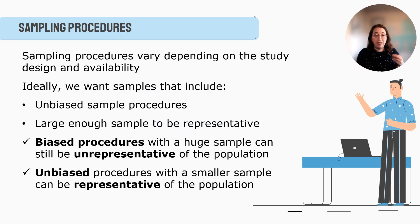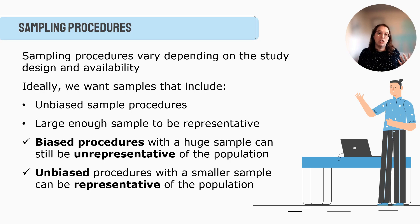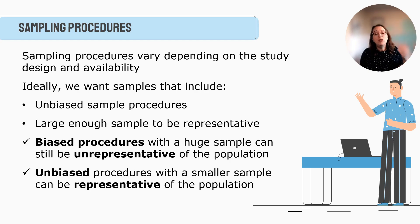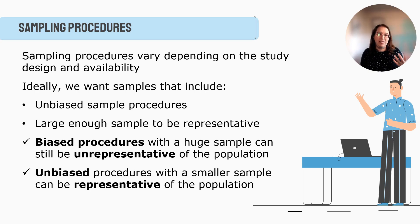Sampling procedures vary depending on the study design and availability of clients to recruit. Depending on a quantitative versus a qualitative study, whether we're going to hand out surveys or interview people face to face, and how much access we have to the individuals we want to study — all of those things come together when we're thinking about the sampling process.